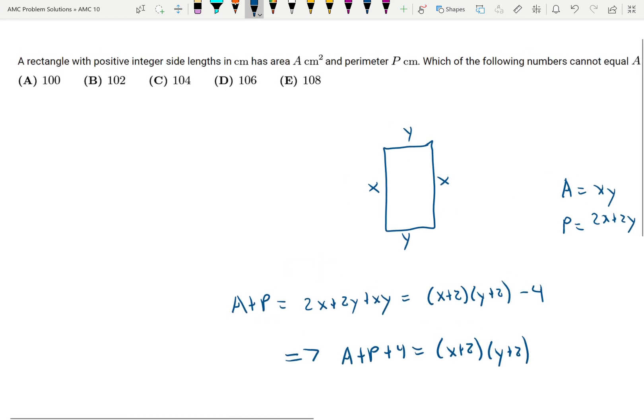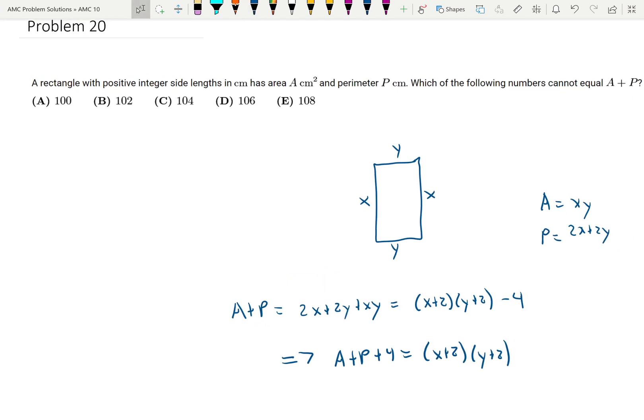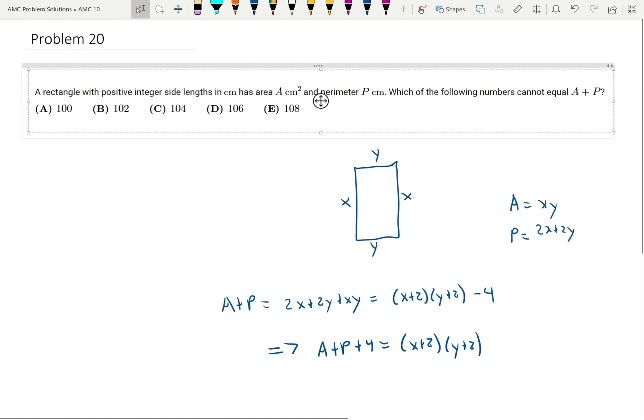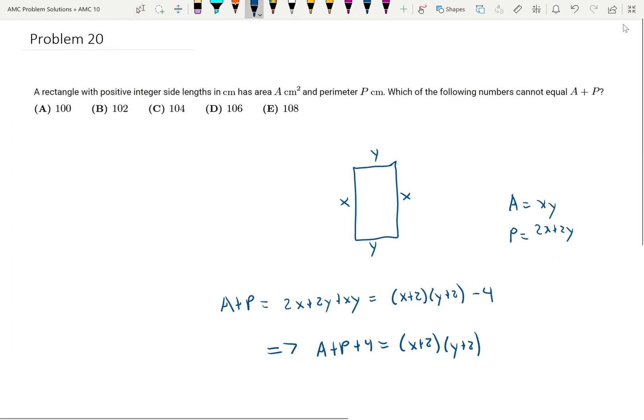So therefore if we look at these values, A plus P plus 4, if we change these it will be 104, 106, 108, 110, 112.